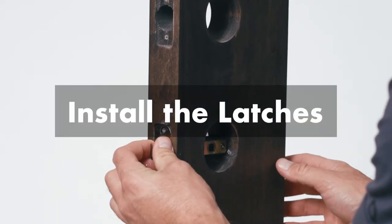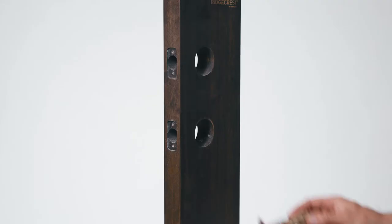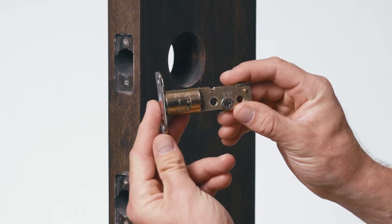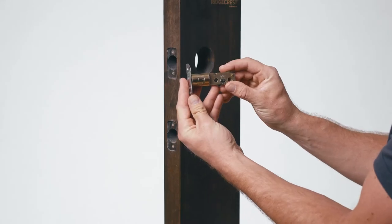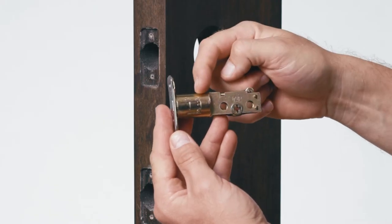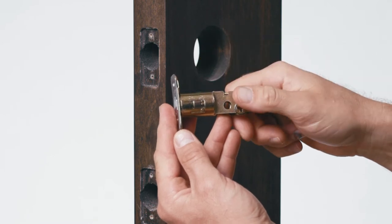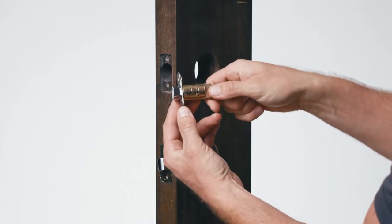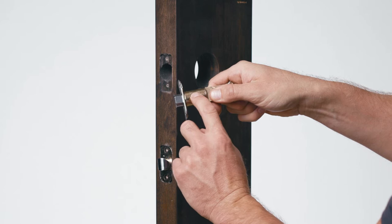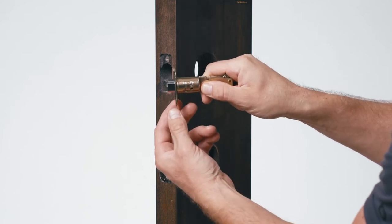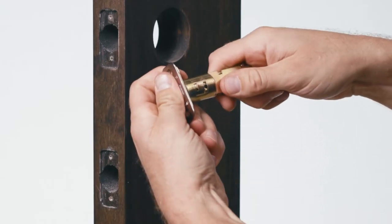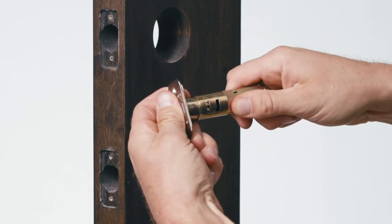The first step is to install the latches. Note that the latch may need adjustment to match the bore depth of your door. To adjust the latch, find the stamped numbers that say 2 3 8 and 2 3 4. Latches come preset at 2 3 8. If you need to adjust to 2 3 4, grab the latch faceplate and latch body, twist, pull, and twist.